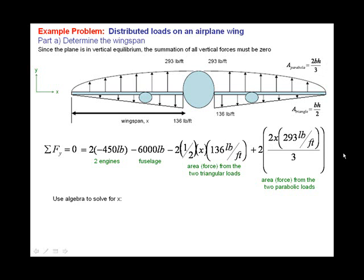Using algebra, we can reduce this equation, solve for x, find that x is 27.1 feet, just over 27 feet long, the wingspan on the C12 King Air.